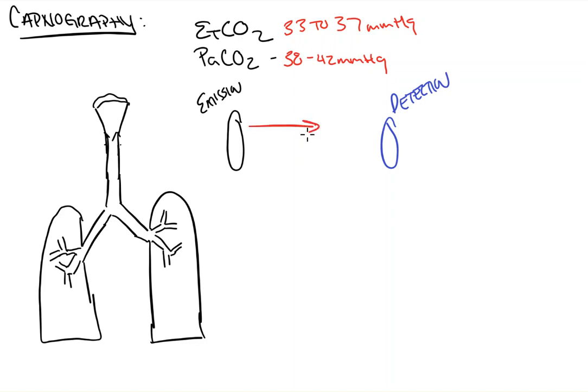Infrared light is sent across at 4.25 micrometers. And this is the same wavelength that interacts with and is absorbed by our CO2 molecules. So as a gas sample enters the monitor, various amounts of light from the emission source will reach the detection point, based off of the amount of CO2 inside.